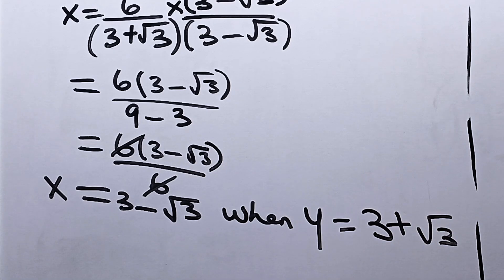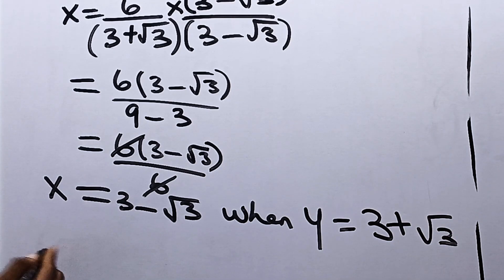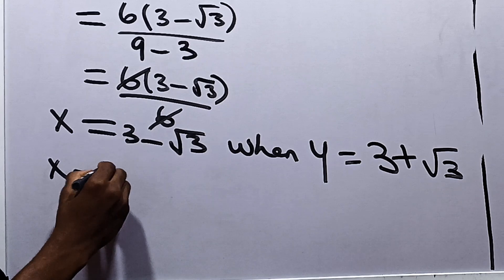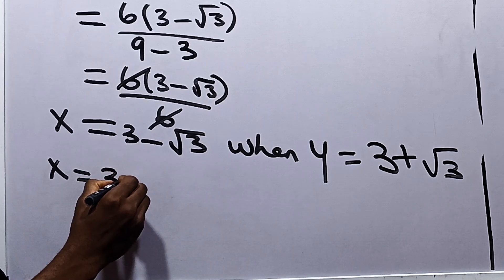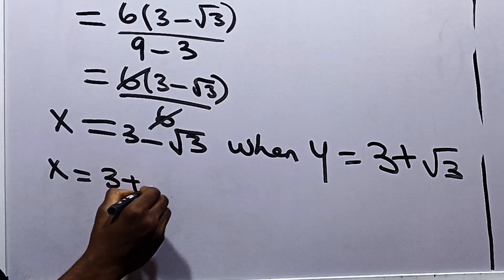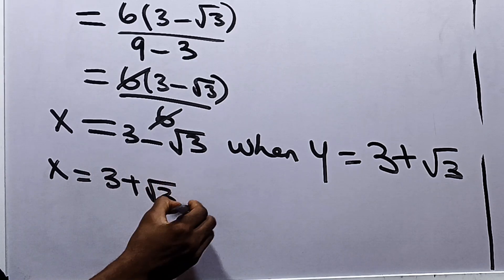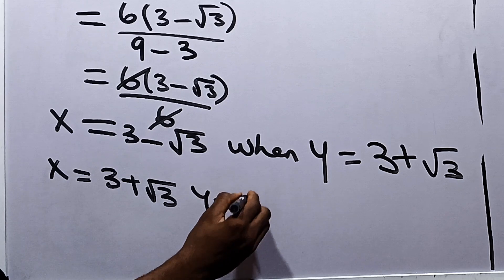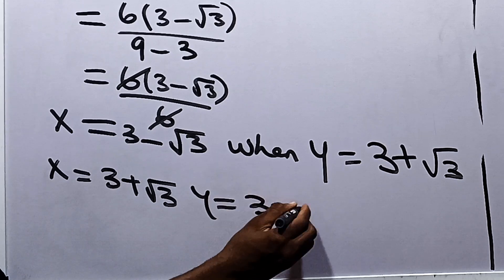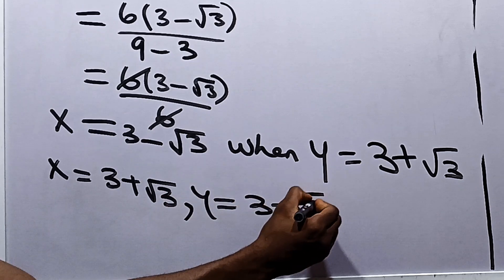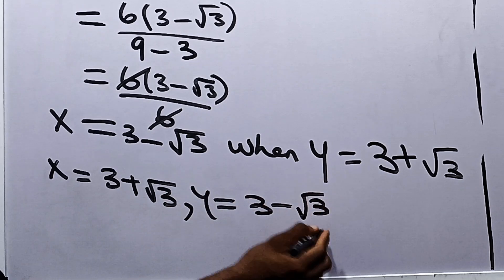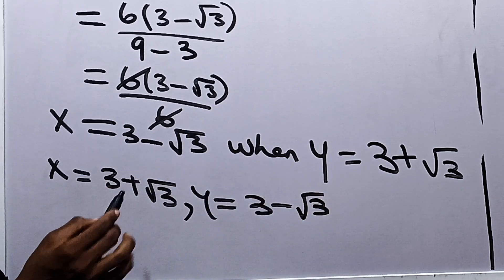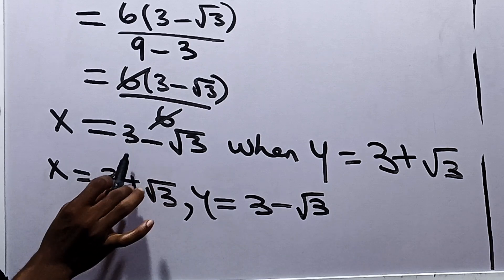We can conclude that when x is equal to 3 plus root 3, y will become equal to 3 minus root 3. So the two values of y are also 3 plus or minus root 3.